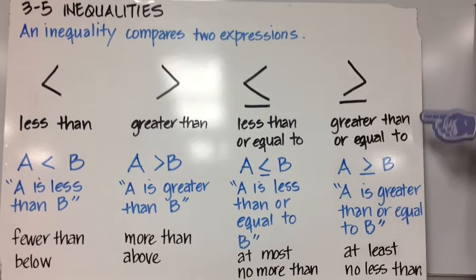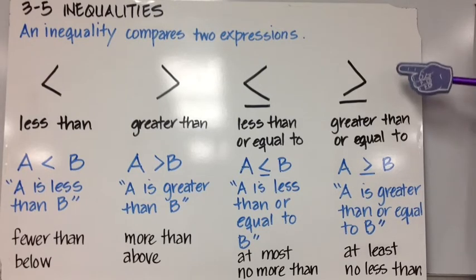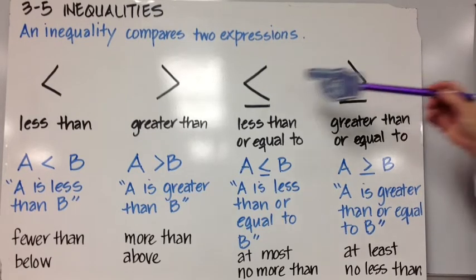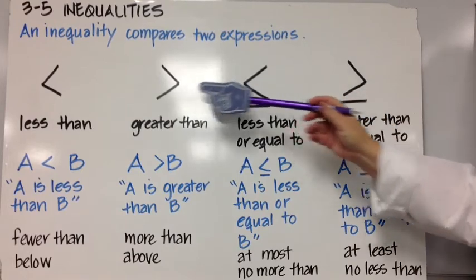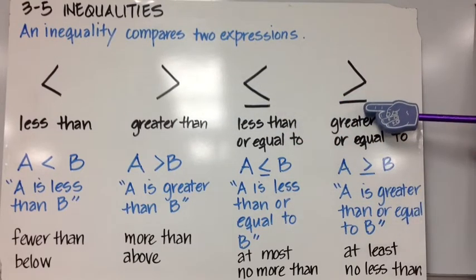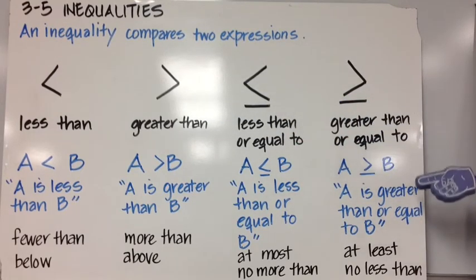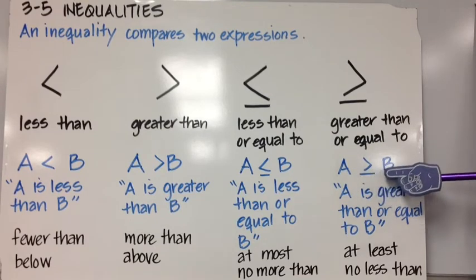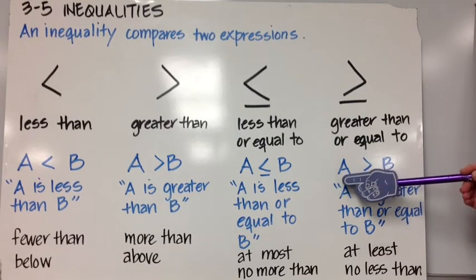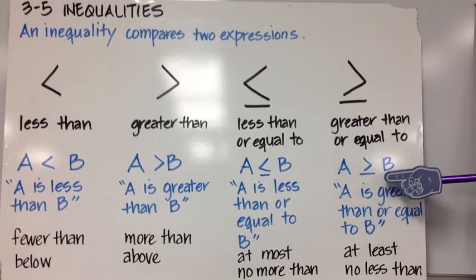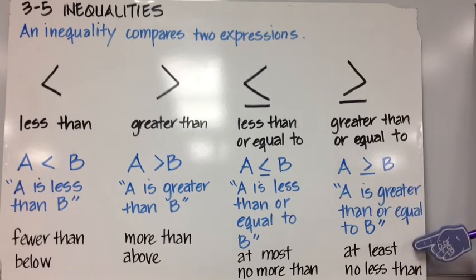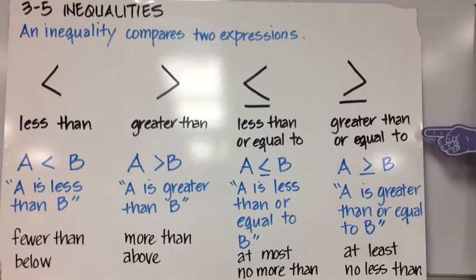Greater than or equal to. Compare this to greater than — the only difference is the line underneath that represents 'or equal to.' A is greater than or equal to B. Notice the position of A and B in regard to the inequality. We could also say 'at least' for the symbol greater than or equal to.